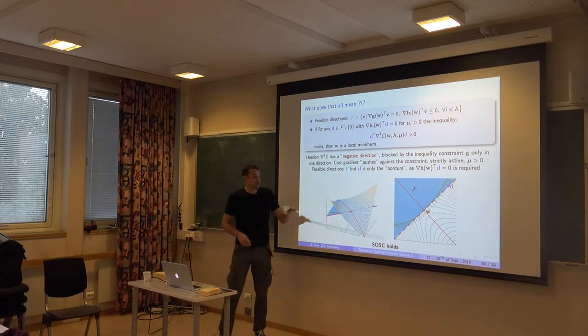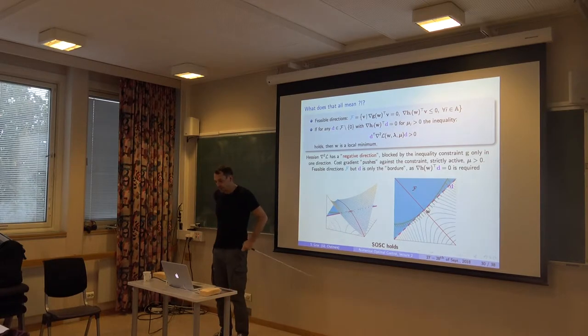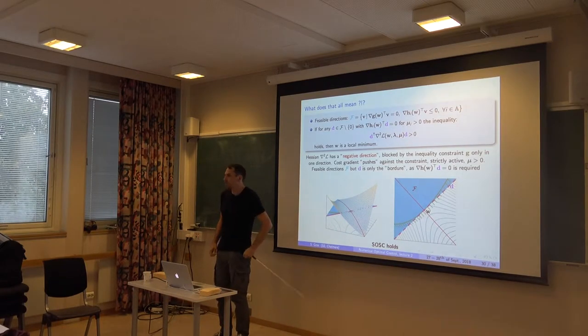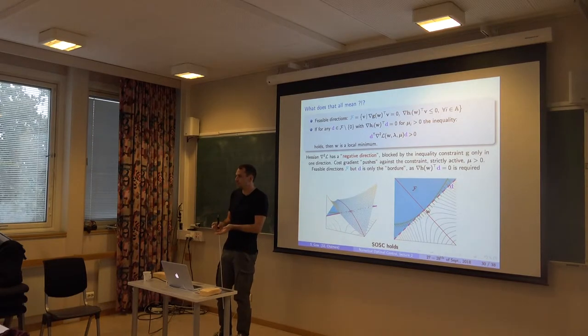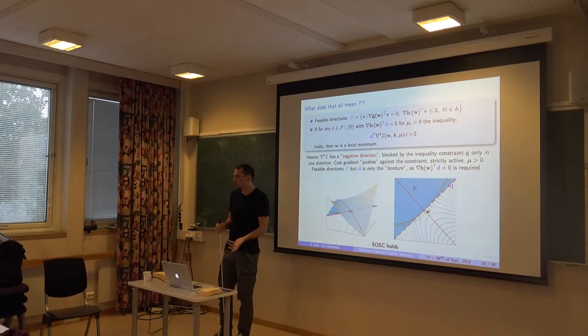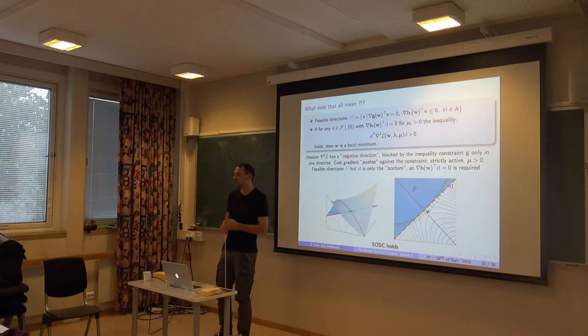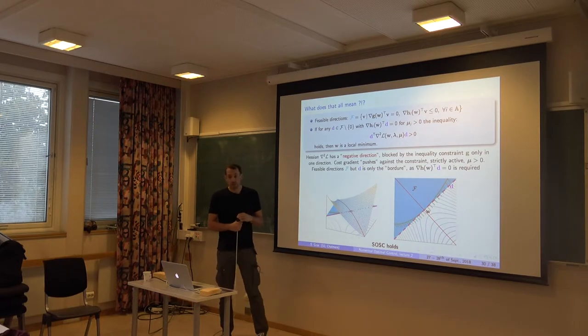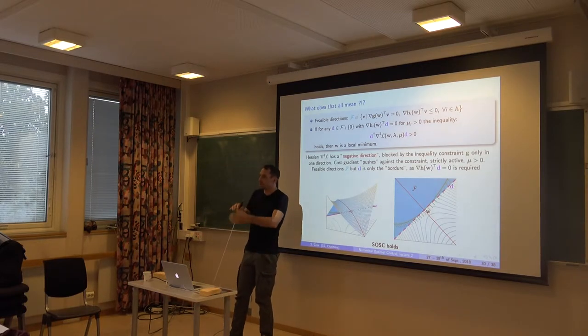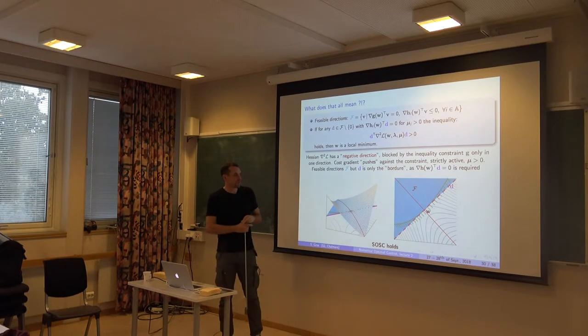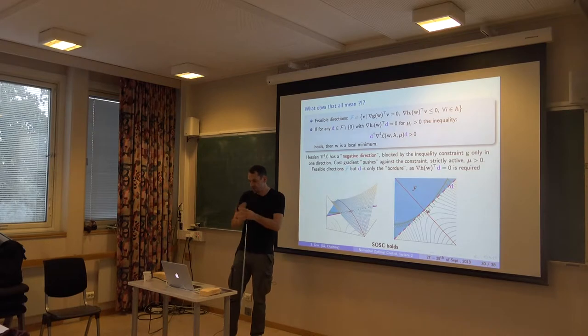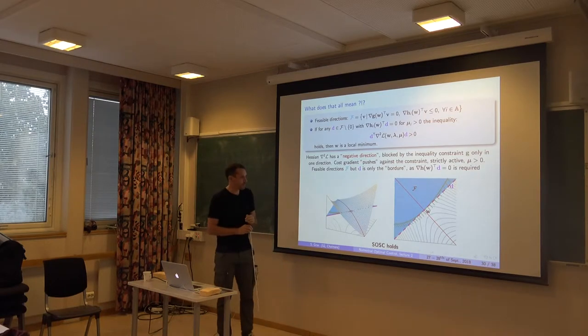And that prevents you from looking at this negative direction. And that happens a lot. I mean, I've seen I don't know how many people puzzled with their optimization problem, but the Hessian of my Lagrange function has negative directions. How does it even work? It's like yeah, but you have constraints blocking this direction, so it actually does work.